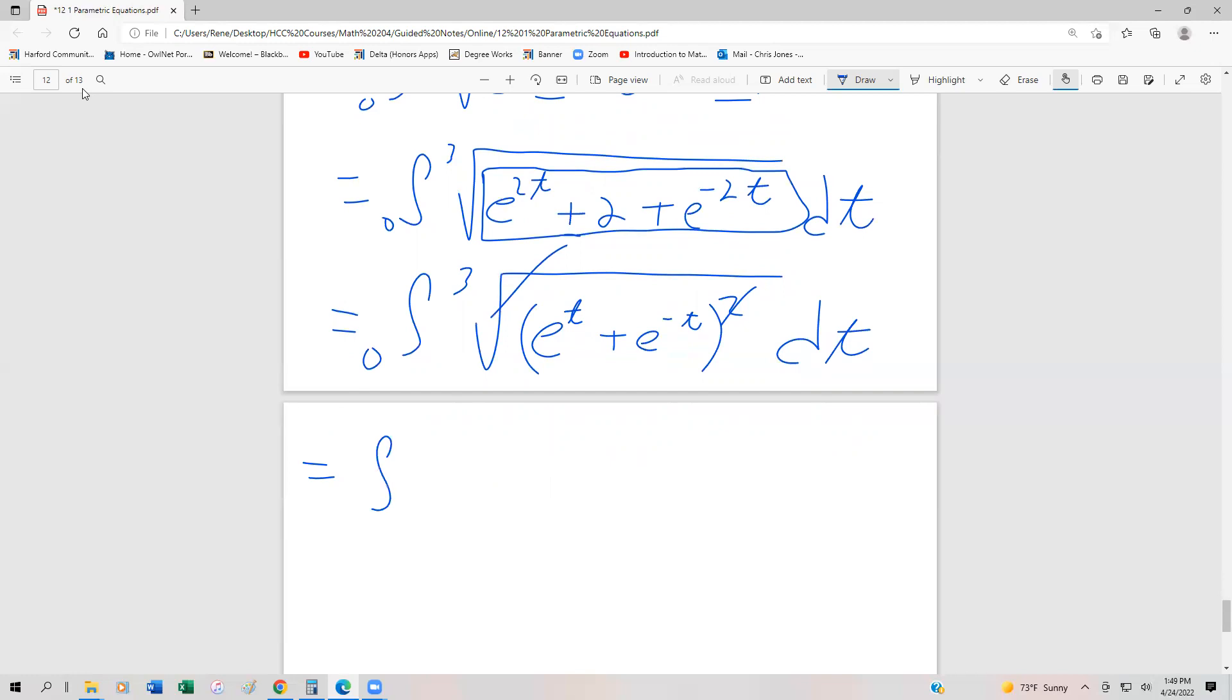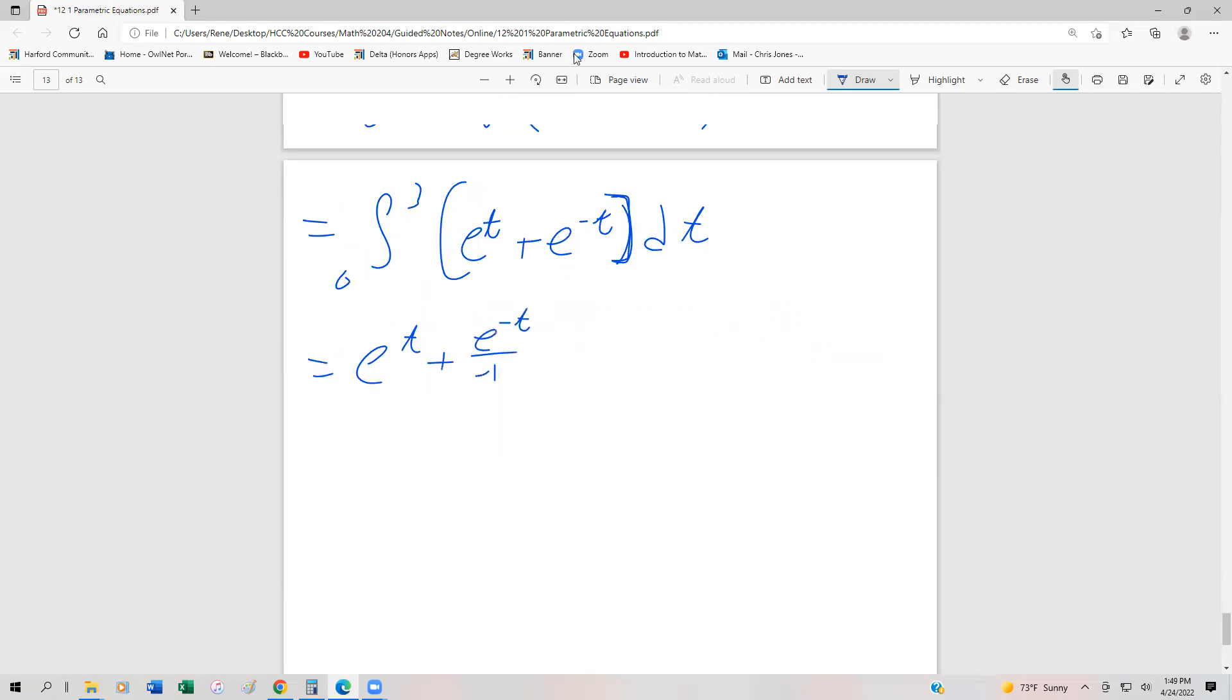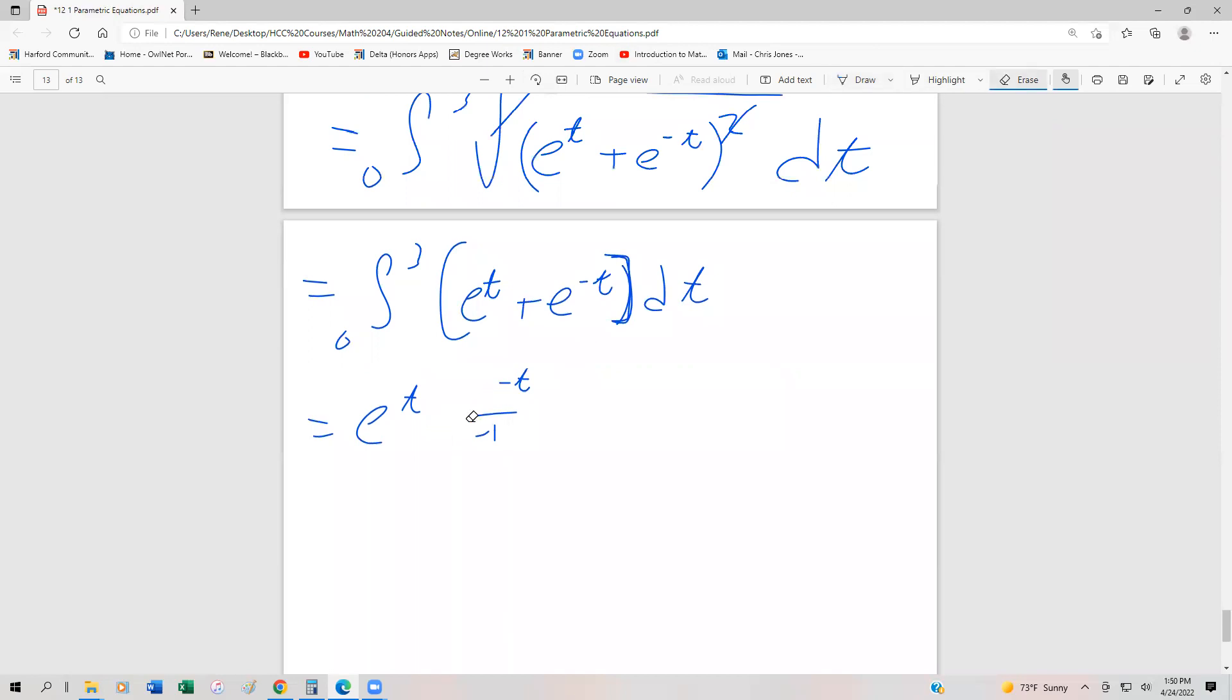We now have the integral from 0 to 3 of (e^t + e^(-t)) dt. When we integrate both of those, they're pretty easy to integrate. So this is going to be e^t. Technically, this is going to be plus e^(-t) over negative 1. We could just write that as minus e^(-t). Because remember, we're doing the reverse of the chain rule. And that's going to go from 0 to 3.